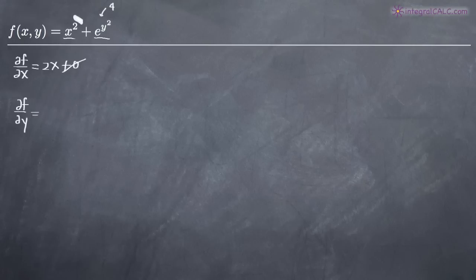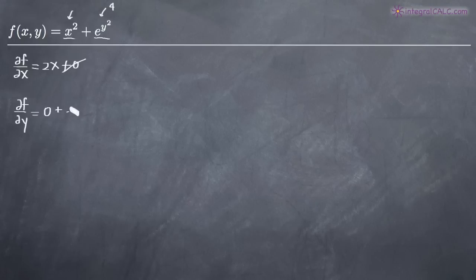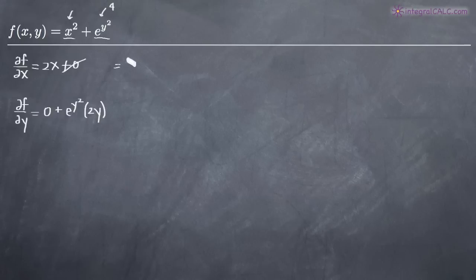Now for the partial derivative with respect to y, again term by term. For the first term, x squared, there's no y variable involved, so the derivative there is going to be zero. But with respect to e to the y squared, we'll have to take the derivative with respect to y. The derivative of e to the x is just e to the x, so similarly the derivative here will just be e to the y squared. But we need to apply chain rule and multiply by the derivative of the exponent y squared, which is 2y. So the first order partial derivative with respect to y is 2y e to the y squared.